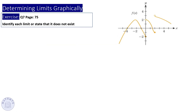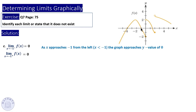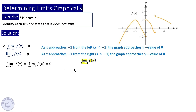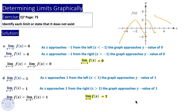Moving on, identify each limit. Find the limit around x = -1: from the left side it approaches 0, and from the right side it also approaches 0, so the limit equals 0. Now pause the video and investigate the limit around x = 1. As you can see, the y-values approach 1 from both sides, therefore the limit equals 1.